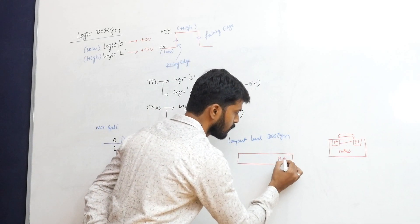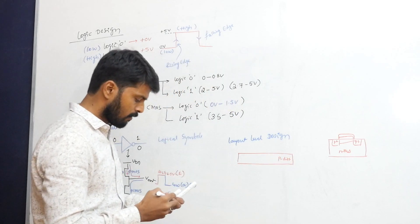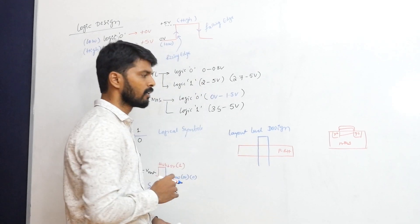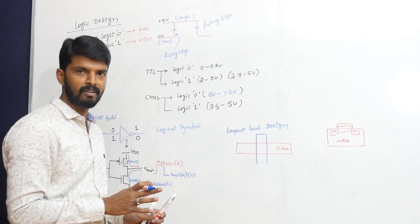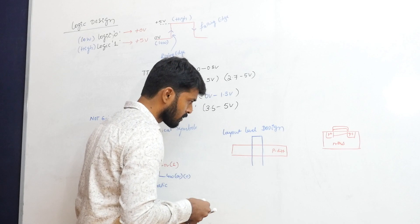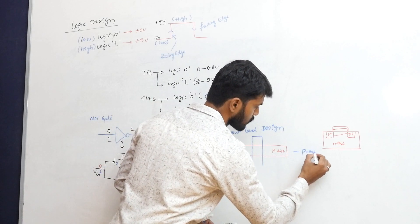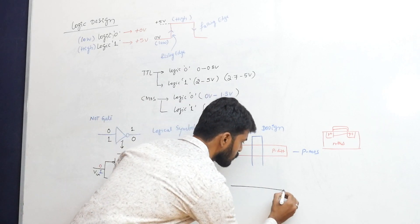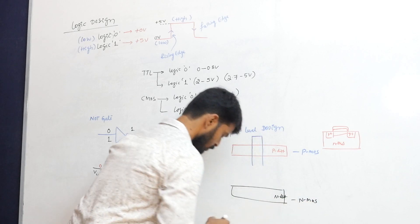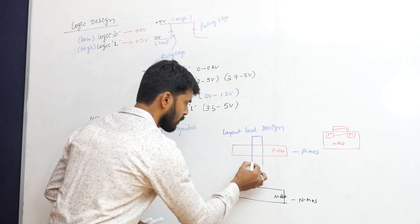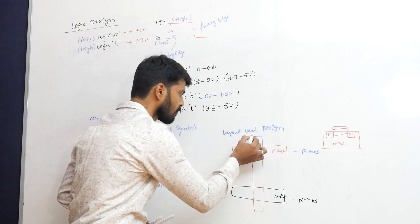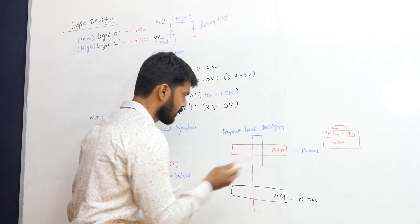In the layout, we have P-diffusion regions and a gate. The gate structure extends across the layout — you can see the gate extends from the PMOS region all the way through. This gate is represented as a geometrical structure spanning both the PMOS and NMOS portions of the inverter layout.